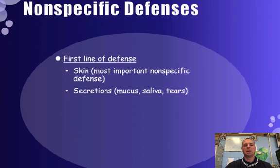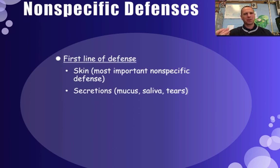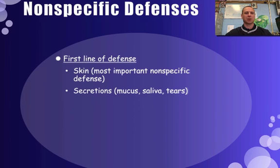The first line of nonspecific defense is your skin — probably the most important, because it keeps out most things. There are microorganisms and pathogens constantly trying to invade our body and find an opening. We have natural openings like the mouth, nose, eyes, and ears, but we have ways to protect those. However, if you cut your finger, that's an opening that's not normally there, so pathogens would be waiting to get in. That's why it's important to clean out the cut, add antibiotics, and keep it covered.